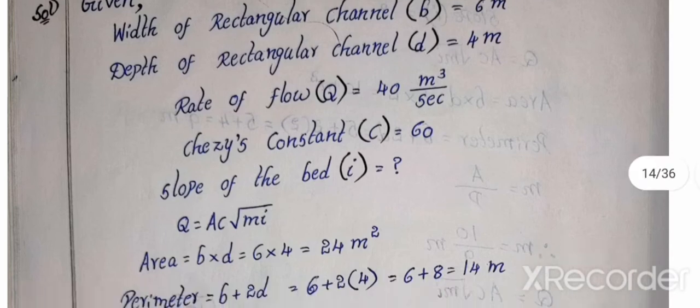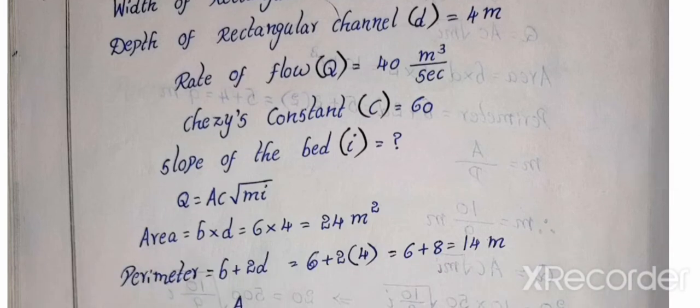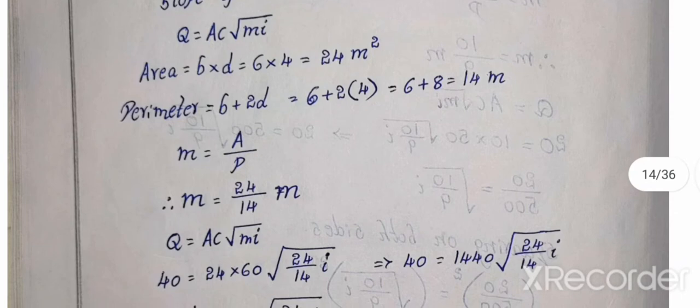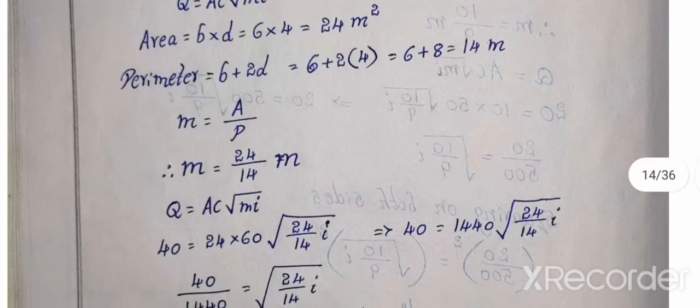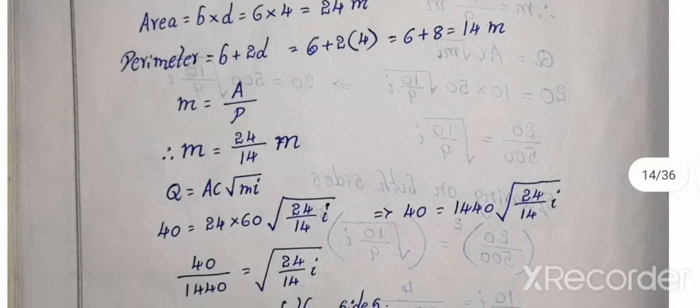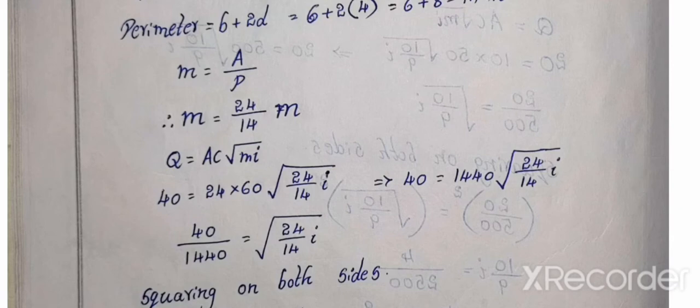So given data and first note, width 6 meters, depth 4 meters, discharge 40, C value 60, i value calculation. So first formula, Q equal to AC root Mi. 6 into 4 is 24 meter square. Perimeter calculation as usual, so perimeter, area calculation. So m equal to A by P formula, m value calculation.